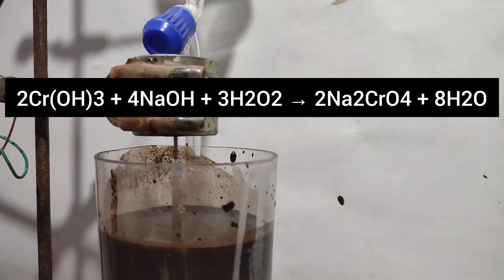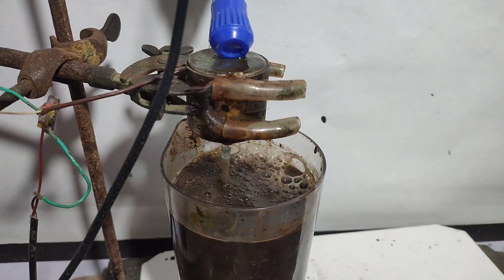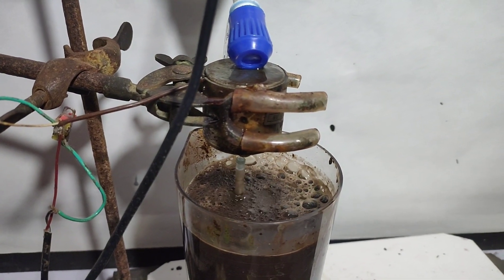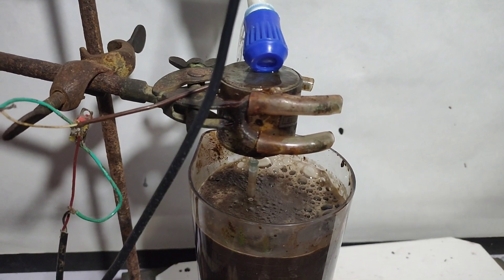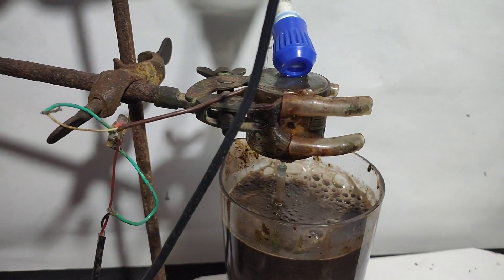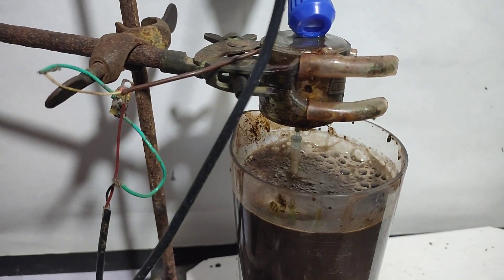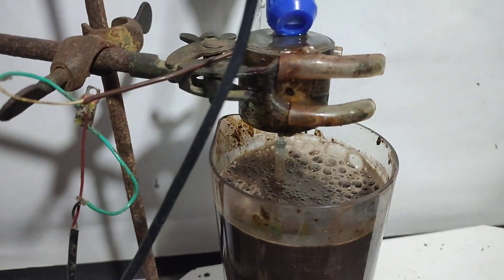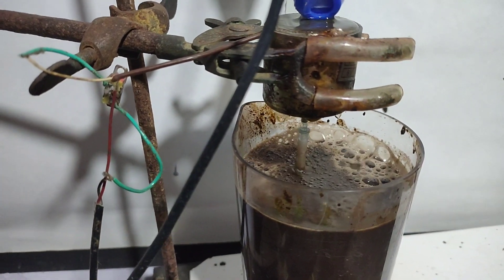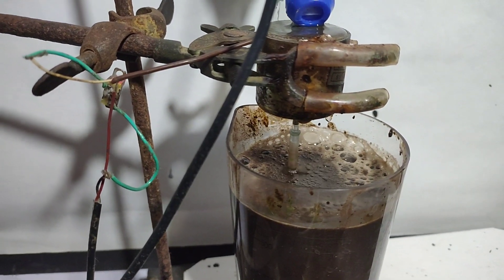The volume became large so I transferred the solution into a larger beaker. After adding 300 ml hydrogen peroxide, on further addition vigorous foaming started taking place, so I thought reaction was over and all the chromium hydroxide would have been converted to sodium chromate.